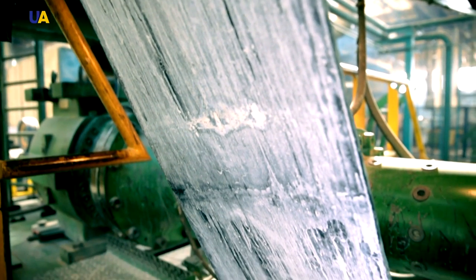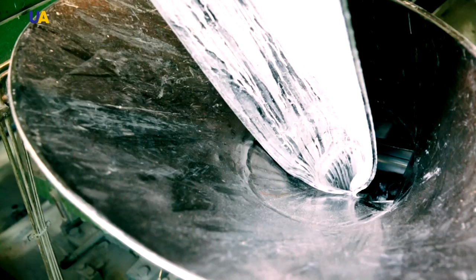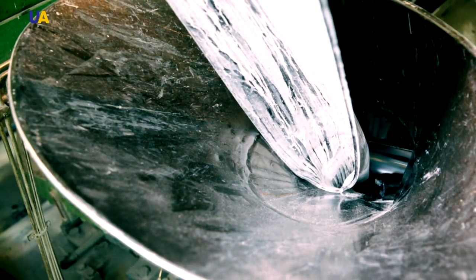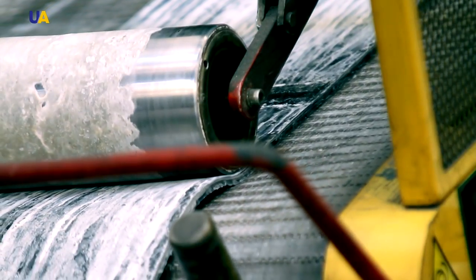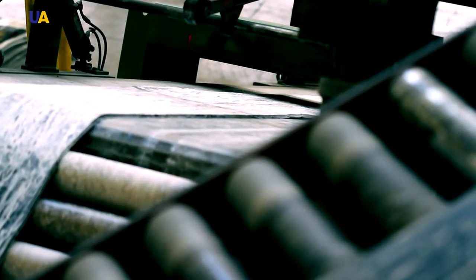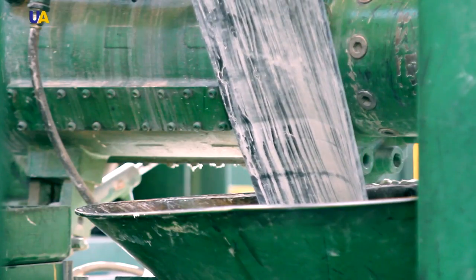The rubber mixture is loaded into the extruder. The speed of forming parts, depending on the size, can be from 15 to 30 meters per minute. Inside the extruder, the rubber mixture is processed and heated to a temperature of more than 100 degrees.